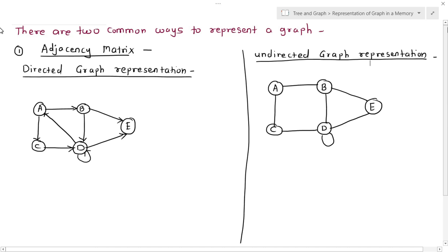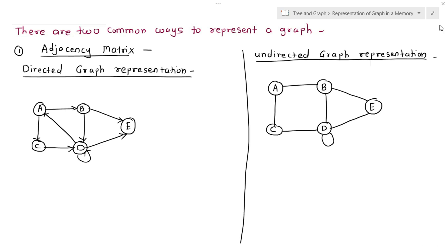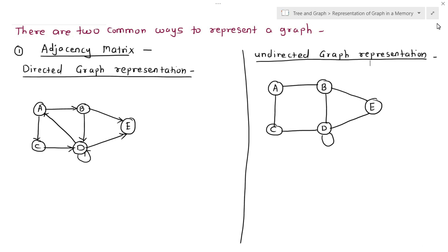In this lecture we are going to learn about how to represent a graph in memory. There are two ways: using an adjacency matrix and using an adjacency list. While representing the graph, we use two types of graphs — a directed graph and an undirected graph. A directed graph shows direction between nodes, while an undirected graph has no direction. Let's first represent a graph using an adjacency matrix with a directed graph.